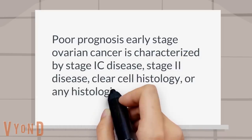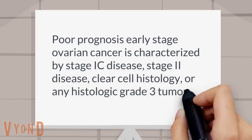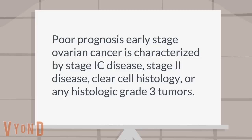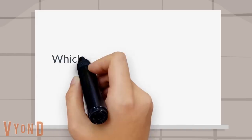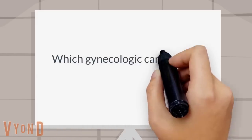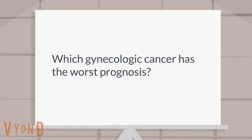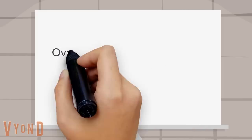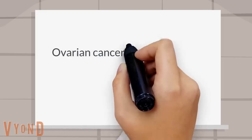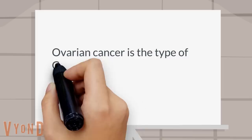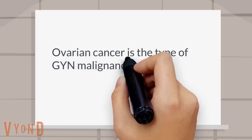Poor prognosis early stage ovarian cancer is characterized by stage 1C disease, stage 2 disease, clear cell histology, or any histologic grade 3 tumors.